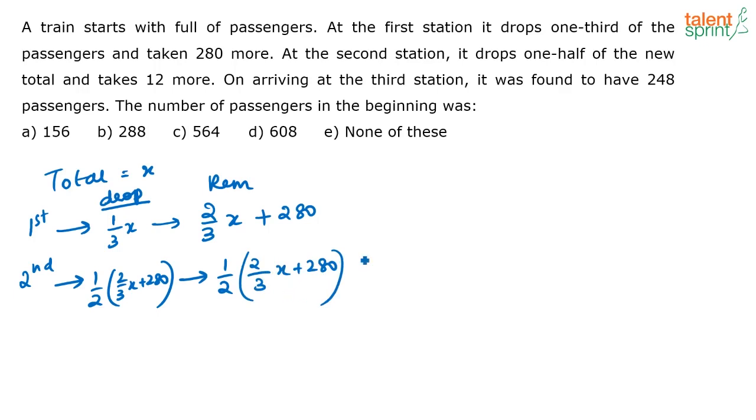Now what is he doing? He is taking 12 more people. Now on arriving at the third station it was found to have 248 passengers. So this is equal to... Now the number of passengers in the train is nothing but equal to 248. Find out the value of x. That's all we have asked.